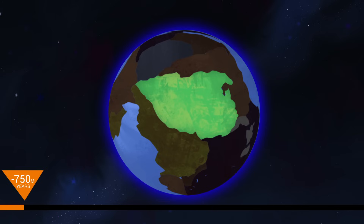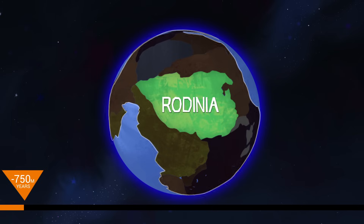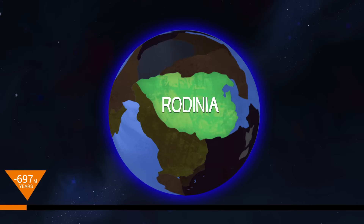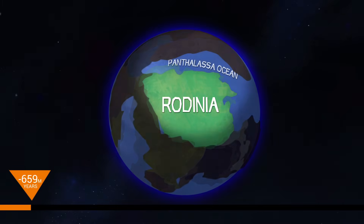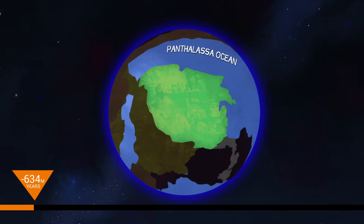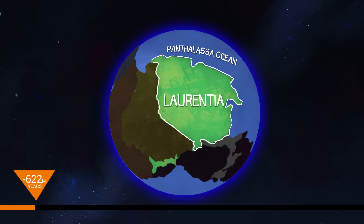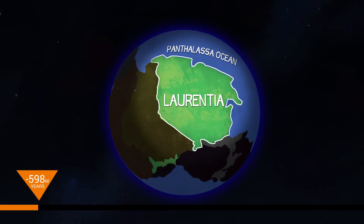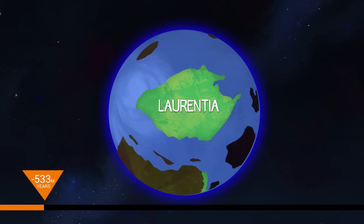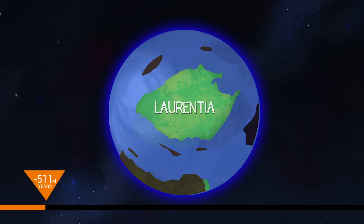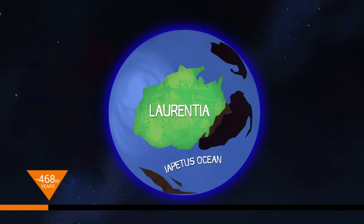Our story begins about 750 million years ago, as the supercontinent Rodinia becomes unstable. It rifts along what's now the west coast of North America to create the Panthalassa Ocean. You're seeing an ancestral continent called Laurentia, which grows over the next few hundred million years as island chains collide with it and add land mass.